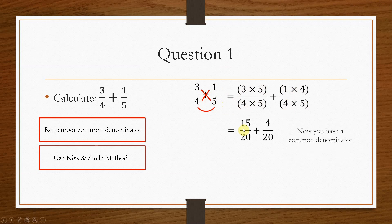Now, this will give you 15 over 20 plus 4 over 20. Now that you've got the common denominator on the bottom of 20, which means you only add the two top values. So in this case, 15 plus 4 will give us 19 over 20.